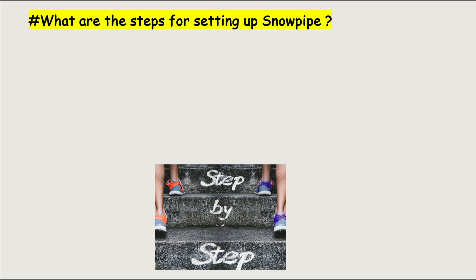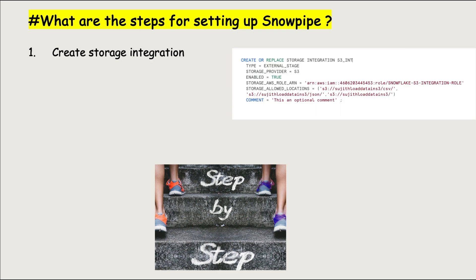What are the steps for setting up Snowpipe? The first step is to create a storage integration. Creating a storage integration is the process of establishing connectivity between Snowflake and cloud storage. This connectivity must be established to be able to copy data from cloud storage to Snowflake. You need to ensure that this exists before you create a pipe.